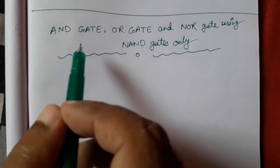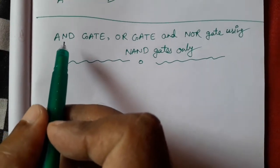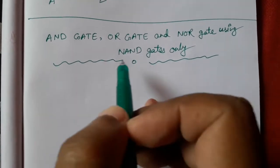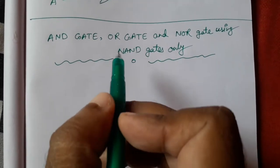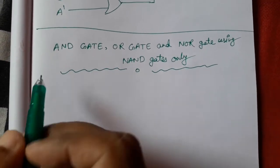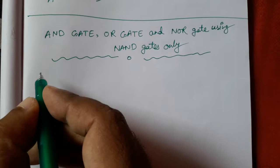Okay students, now today we will learn AND gates, OR gates and NOR gates construction using NAND gates only. That means we will use only NAND gates to construct first AND, then OR, then NOR. How we will do that? Let's see.